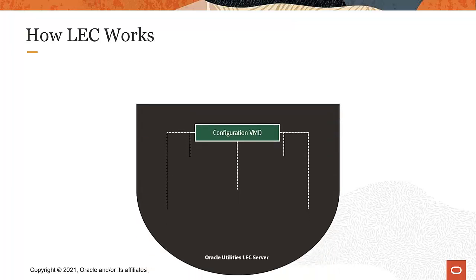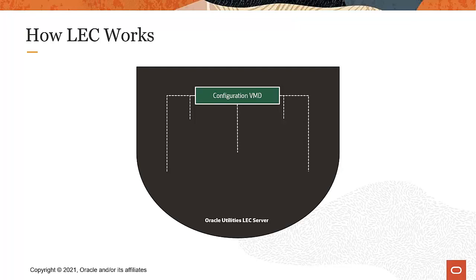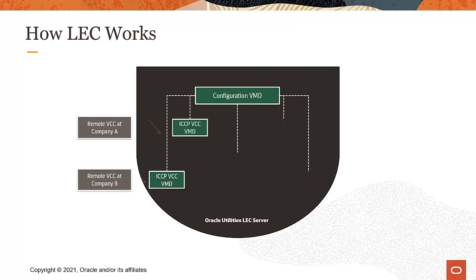This is an example LEC Server configuration. On the left, you'll see a Remote Virtual Control Center, or VCC, at Company A, and a Remote VCC at Company B. Both are using the Inter-Control Center Protocol, or ICCP Protocol, to communicate with another VCC VMD. On the right, you'll see another device using Distributed Network Protocol, or DNP 3.0, to talk to a VMD in our LEC Server as well.